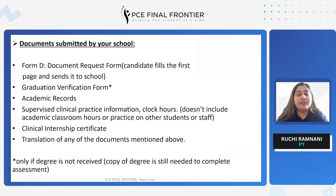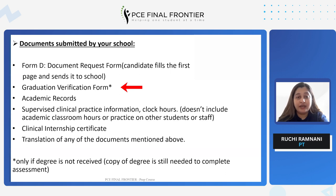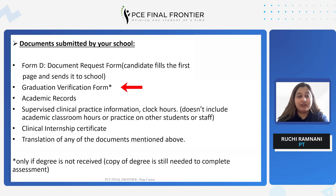The school would attach different documents such as the graduation verification form. The graduation verification form is only required if you have not yet received your degree. This form states, as mentioned by the school, that you have finished your degree, fulfilled all the criteria needed to become a physiotherapist in your country, and that you are awaiting your degree. However, the graduation verification form does not fulfill the requirement of your degree certificate. Even if CAPR starts their credentialing process based on your graduation verification form, it will be kept on hold until they receive your actual degree certificate.